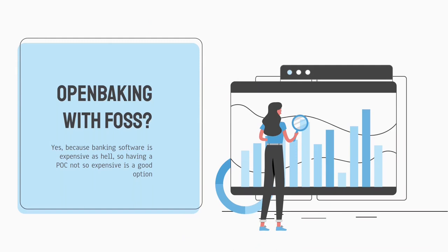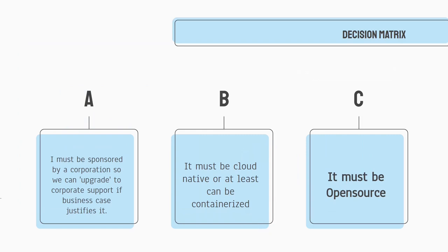How can we implement open banking with free and open source software? Free and open source software many times does not go well with banks. Why? Because banks, being regulated institutions, tend to select service providers — service providers they can sue if there is a problem, who can guarantee compliance with all the modifications they face. When you are using free and open source software, normally you don't have this type of security. But right now, many open source solutions are sponsored by corporate providers. We have both closed source and open source, and that makes part of our decision matrix.